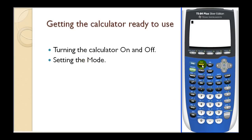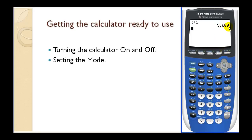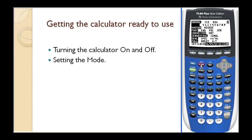Now let's take a look at the mode settings. Here is the mode button — let's press this. The main thing I want to talk about is this second row where it has the word float and then the numbers zero through nine. I recommend leaving it on float. If you do set it to a fixed number of decimal places, let's say three, and go to the home screen by pressing second mode for quit, if I press three plus two, it'll look strange — it'll show five point zero zero zero. It will always have three decimal places if you have it set at three fixed decimal places.